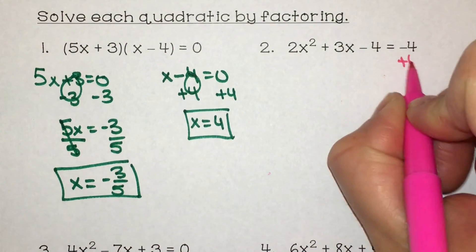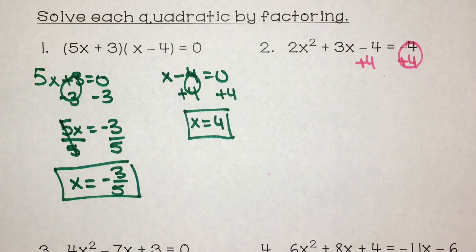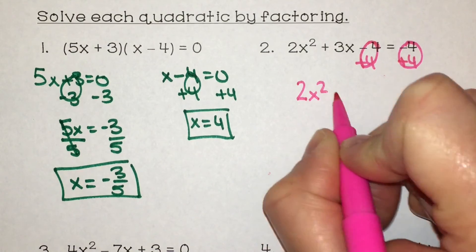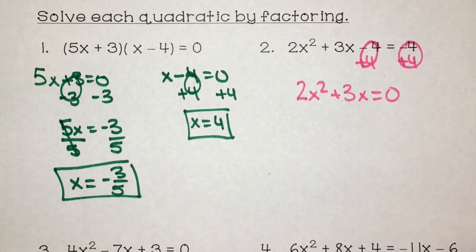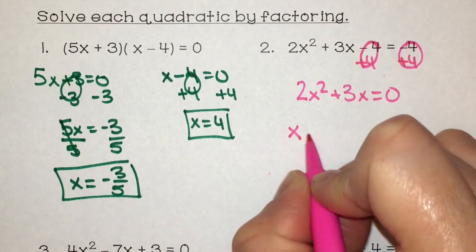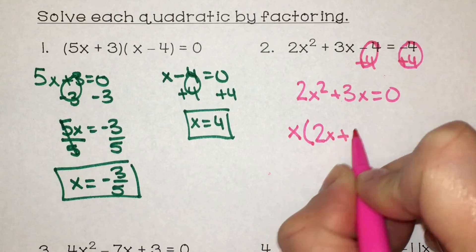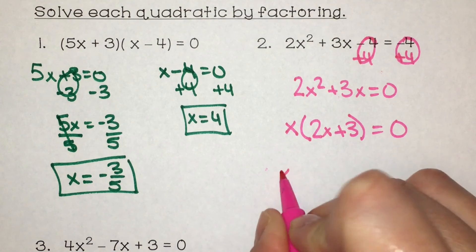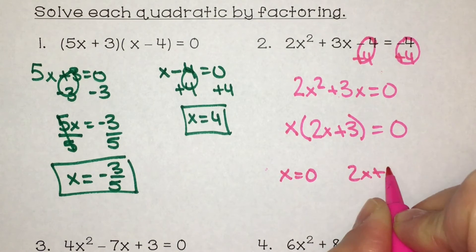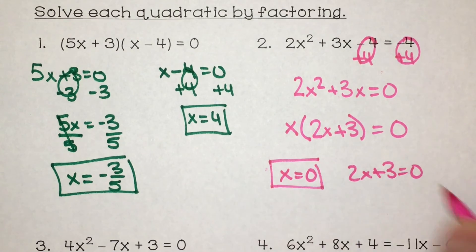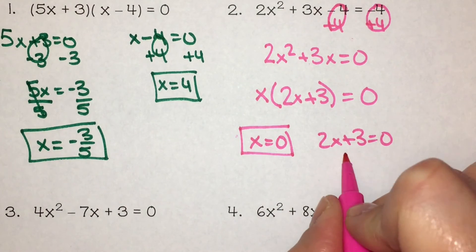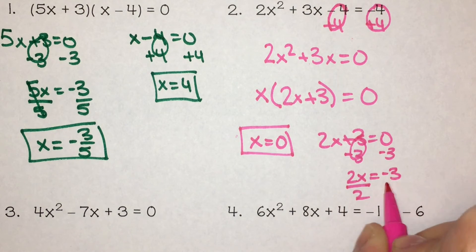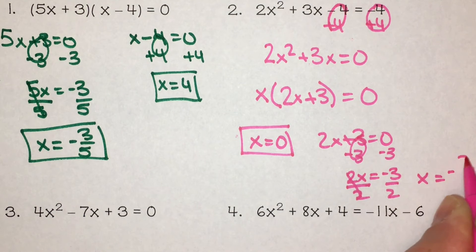Number 2. I need to add 4 to both sides because it has to equal 0 on the right. Negative 4 plus 4 is 0 on both sides, so I have 2x squared plus 3x equals 0. I can factor out an x, leaving 2x plus 3 equals 0. Setting each factor equal to 0: x equals 0 is one solution. For 2x plus 3 equals 0, I subtract 3 on both sides to get 2x equals negative 3, then divide both sides by 2 to get x equals negative 3 halves.